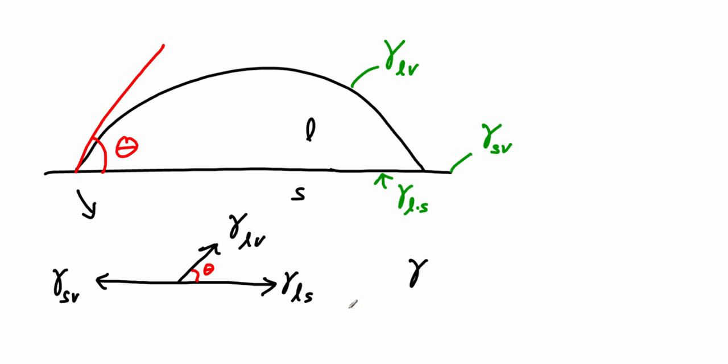The leftward force is going to be equal to the rightward force. So solid-vapor is going to be equal to liquid-solid plus liquid-vapor times the cosine of theta, since we're only interested in balancing the x-components here. We can solve this for the cosine of theta. You can see the cosine of theta is a difference: gamma solid-vapor minus gamma liquid-solid all over gamma liquid-vapor.